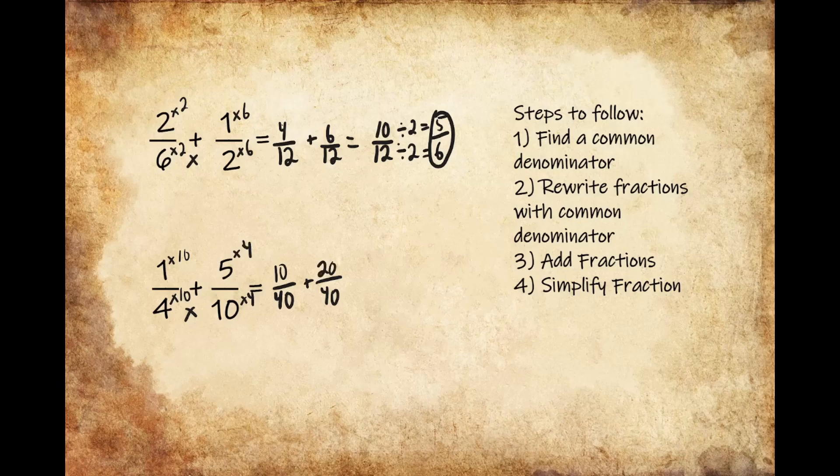Now that I've rewritten these fractions with the common denominator of 40, we can start adding these numbers together. The value of the denominator doesn't change, it's still 40. Now we can just add the value of the numerators. 10 plus 20 gives us 30 for 30/40.